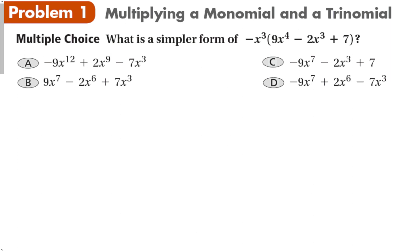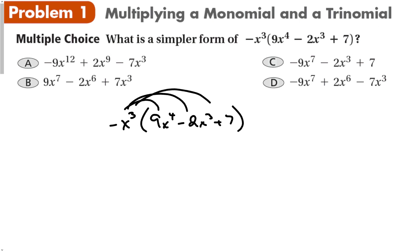Let's try a problem. What is the simpler form of negative x to the 3rd times (9x to the 4th minus 2x to the 3rd plus 7)? We take negative x³ and multiply it to everything inside the parentheses. Negative 1 times 9 is negative 9; x³ times x⁴ gives x⁷ (add exponents). Negative times negative gives positive 2x⁶. Negative times positive gives minus 7x³. The answer is D.